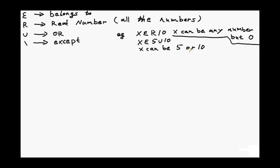The union sign means 'all.' I will show you an example of how to use these later on. The slash means 'except.'